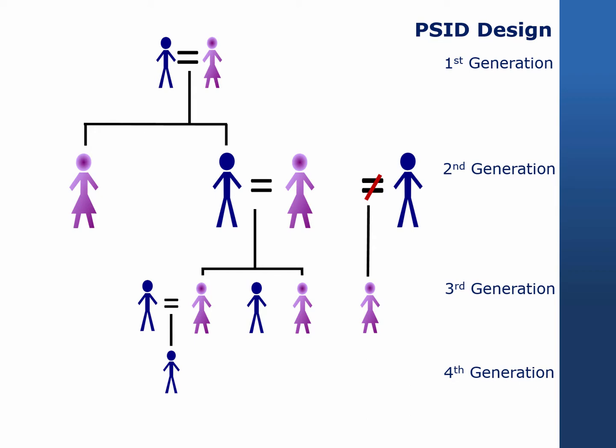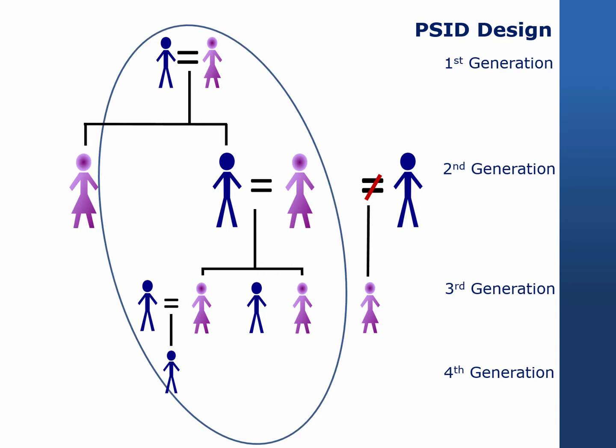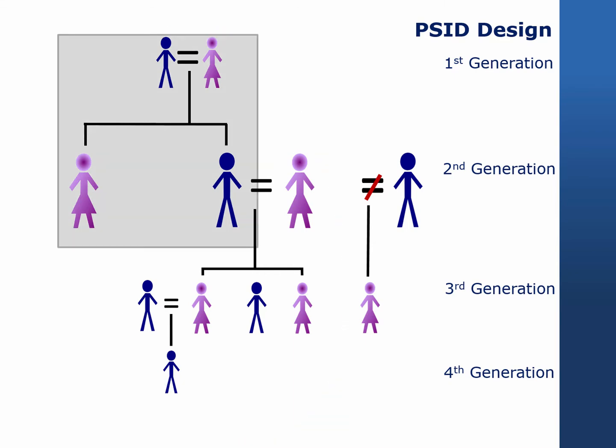Let's take a look at an example that illustrates how PSID family members become sample persons. This family has four generations of PSID sample persons. Shown in gray is an original PSID family consisting of two parents, one adult daughter, and a minor son. The adult daughter was not in the household at the time the PSID sample was drawn and is therefore not considered part of the sample.